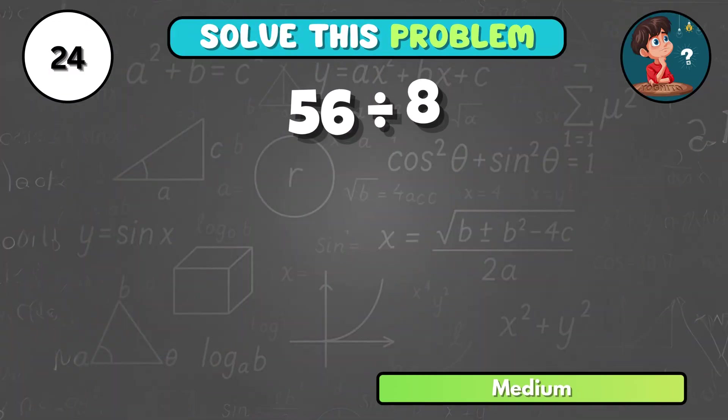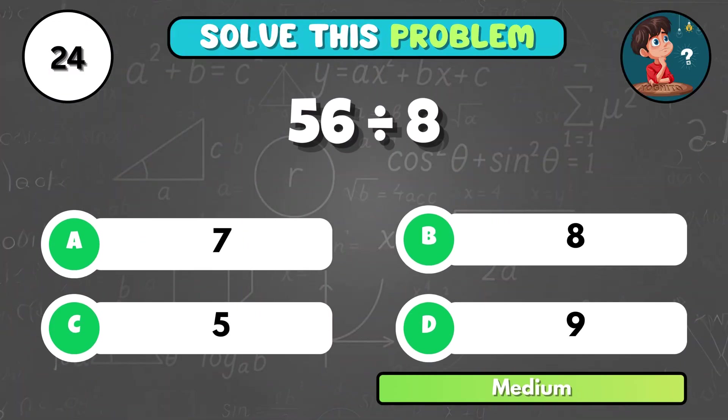Can you solve 56 divided by 8? It equals A, 7.